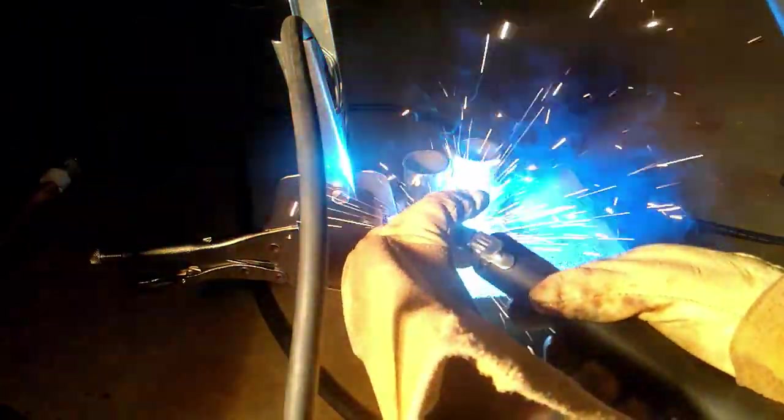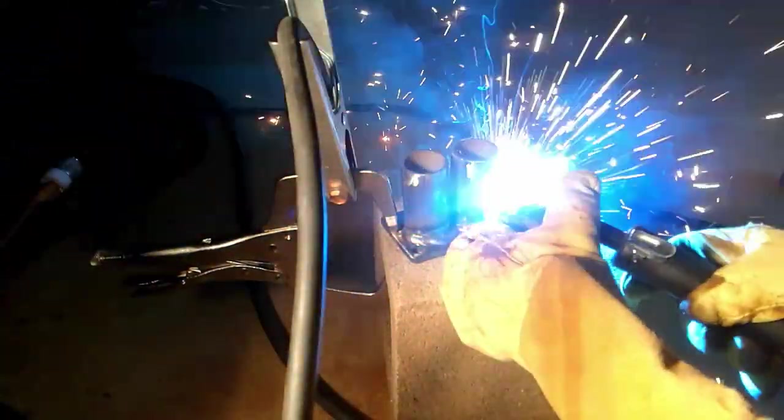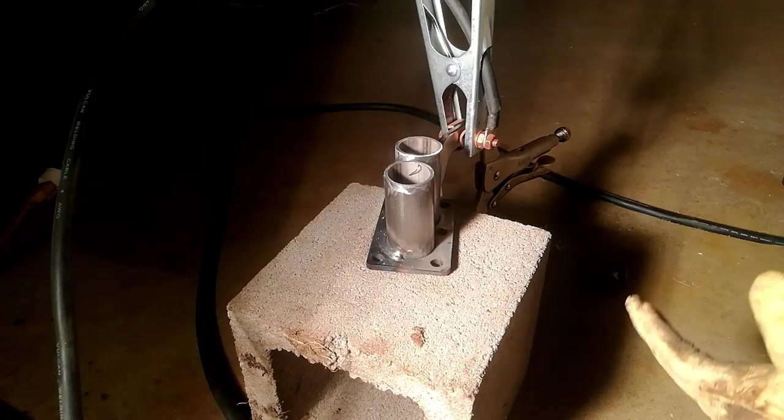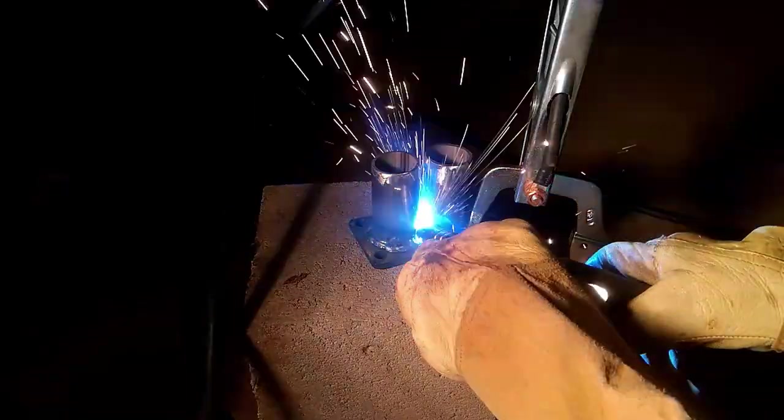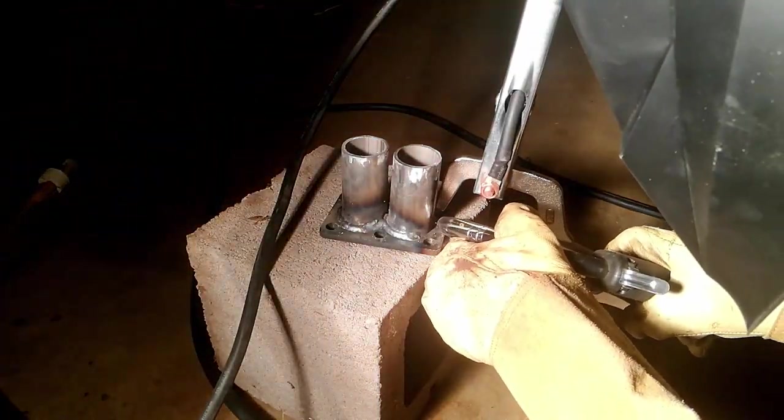So I'm tack welding everything in place, just getting it all in place initially, before I move on to welding the whole thing together. Now I didn't notice it at the time, but these tubes are not exactly straight vertical, and it's pretty evident in the video now that I've looked back at it. But nevertheless, I was still able to make it work the way I wanted it to.